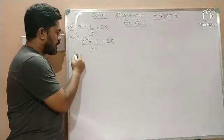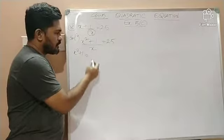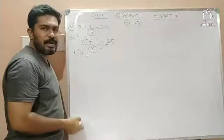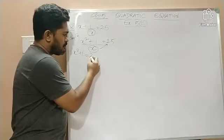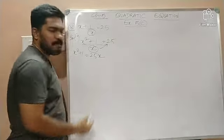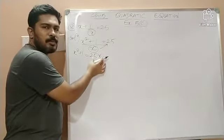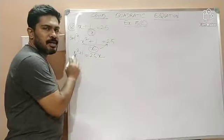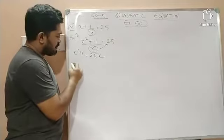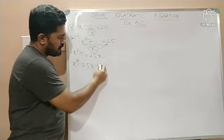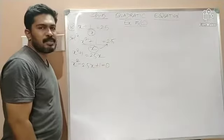In the next step, x square plus 1 is equal to, you will cross multiply x with what? 2.5. So, it becomes 2.5x. Now, in the very next step, I will bring this 2.5x from the right side to the left hand side. Therefore, the equation is x square minus 2.5x plus 1 equal to 0.